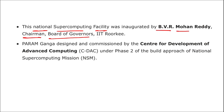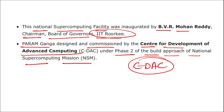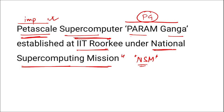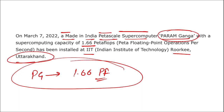Param Ganga was designed and commissioned by the Centre for Development of Advanced Computing, also known as CDAC. It was under Phase 2 of the build approach of the National Supercomputing Mission. To summarize: it is a petascale computer named Param Ganga, established at IIT Roorkee in Uttarakhand, under the National Supercomputing Mission, with a speed of 1.66 petaflops, and computing power is measured in flops.